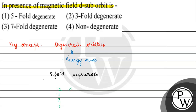Basically, what happens is D has five orbitals: dz², dx²-y², dxy, dyz, and dxz. All five orbitals are present.